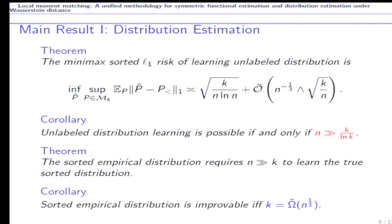And we also remark that the sorted empirical distribution is only achievable if the support size k is not too small. Actually, when the support size k is small, we have enough samples to tell the exact order of the parameters. And our work showed that the exact phase transition point is k equal to n to the one-third.